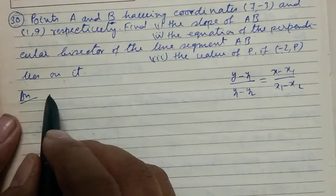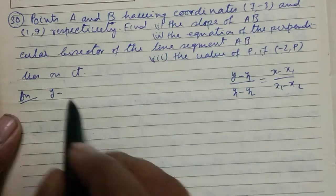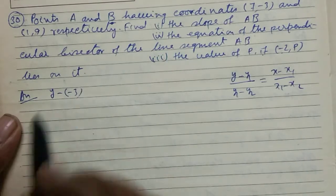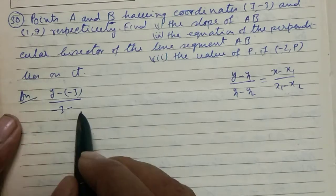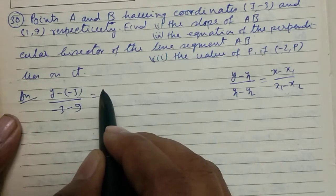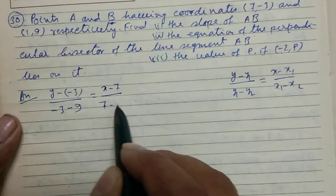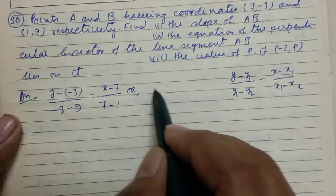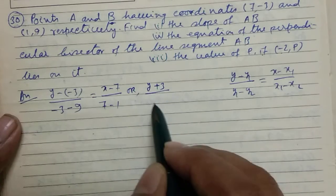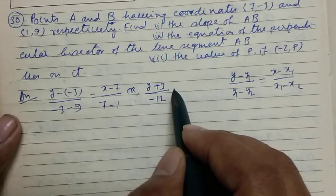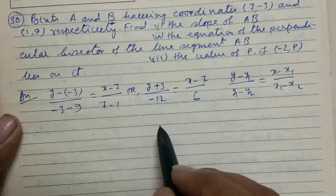Now we put the values of x1 and y1. (y - y1)/(y1 - y2), that is (y - (-3))/(-3 - 9) equals to (x - 7)/(7 - 1), or (y + 3)/(-12) equals to (x - 7)/6.